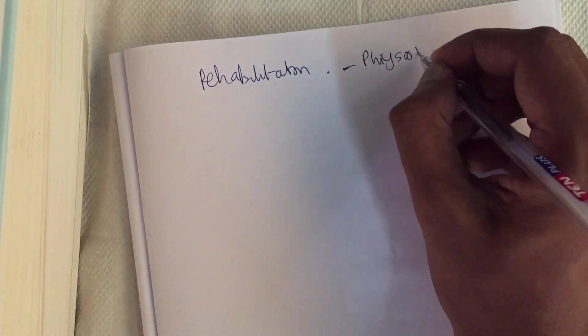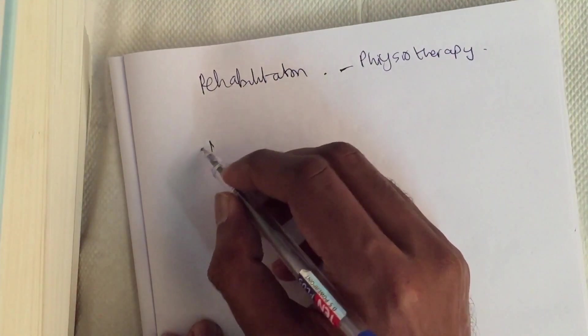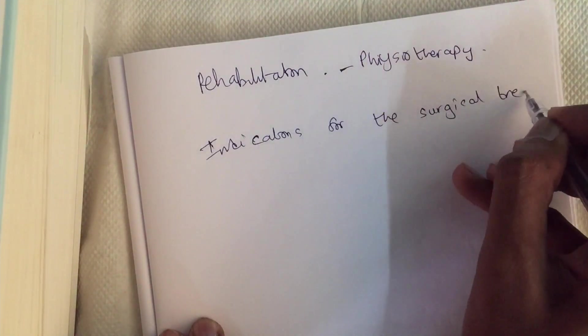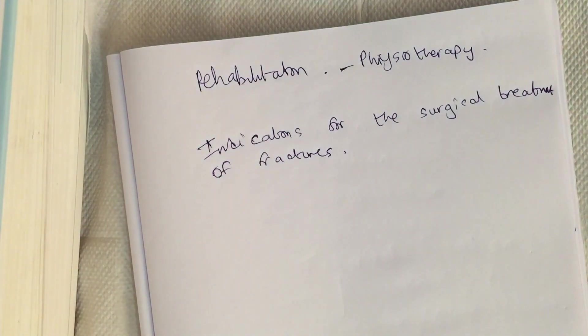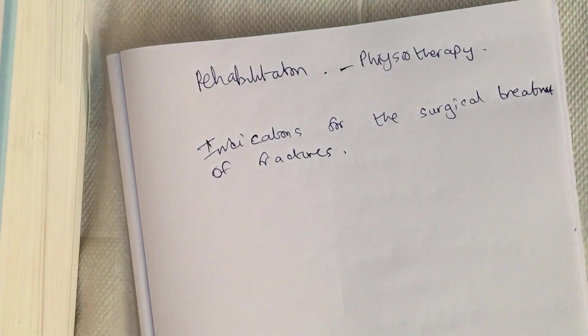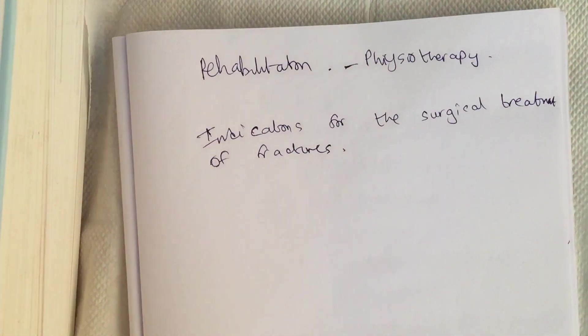The third specific treatment is rehabilitation, done by giving physiotherapy to the patient to bring them back to their original functional level. There are certain indications for surgical treatment of fractures: when fractures occur intra-articularly and are displaced, they should be treated surgically. Pathological fractures also require surgical treatment. In fractures through the growth plate, arrest of growth can happen, so it has to be treated surgically. If there is established nonunion or malunion, that also has to be treated surgically.